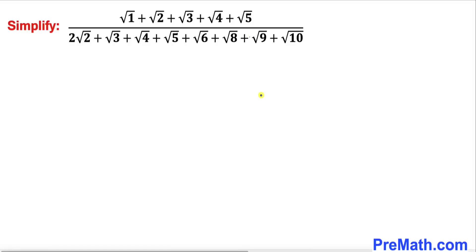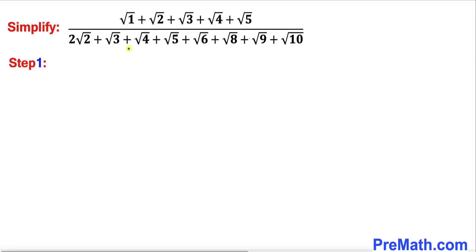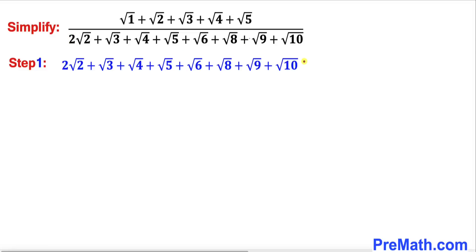Let's go ahead and get started. In order to simplify this given problem we are going to manipulate the denominator so that it looks much like the numerator. Let's focus on the denominator. Now let's focus on this 2 times square root of 2.